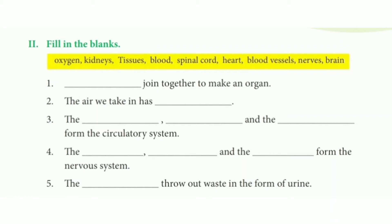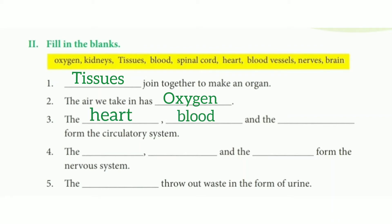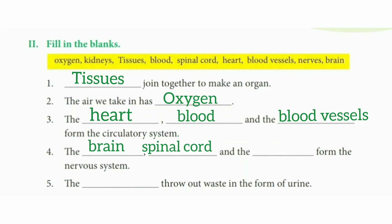Now we have an assessment zone with different questions based on this lesson. For the fill-in-the-blanks: Number 1 — tissues join together to make an organ. Number 2 — the air we take in has oxygen. Number 3 — the heart, the blood, and the blood vessels form the circulatory system. Number 4 — the brain, the spinal cord, and the nerves form the nervous system. Number 5 — the kidneys throw out waste in the form of urine.